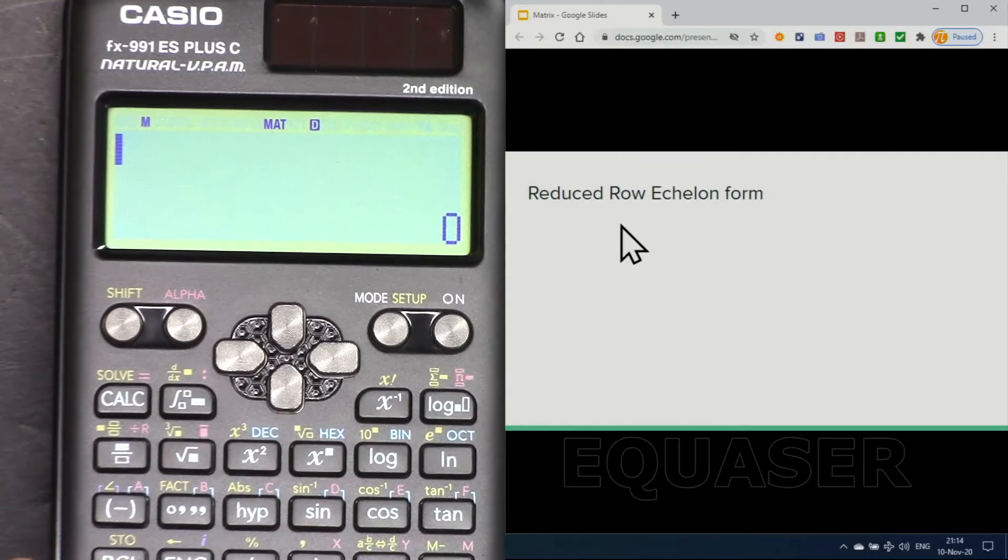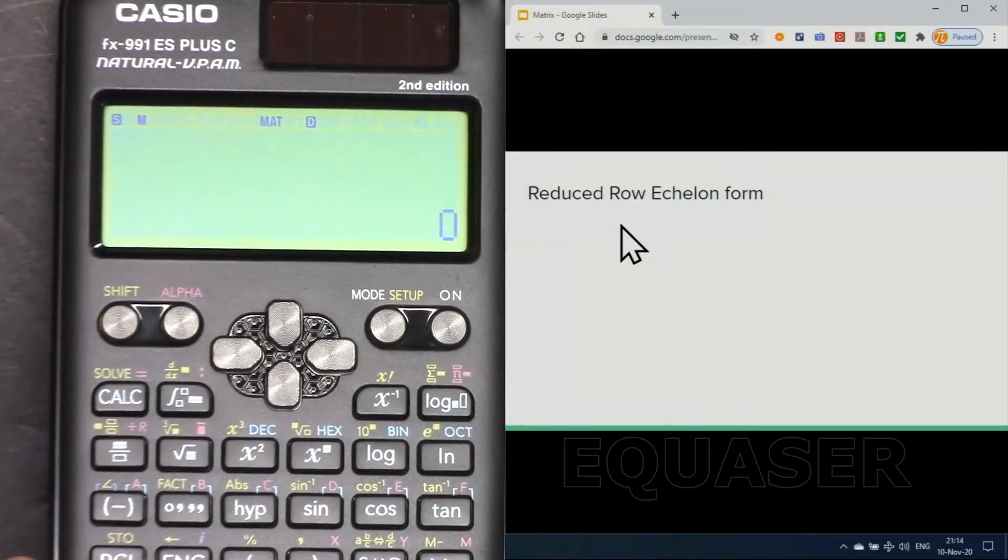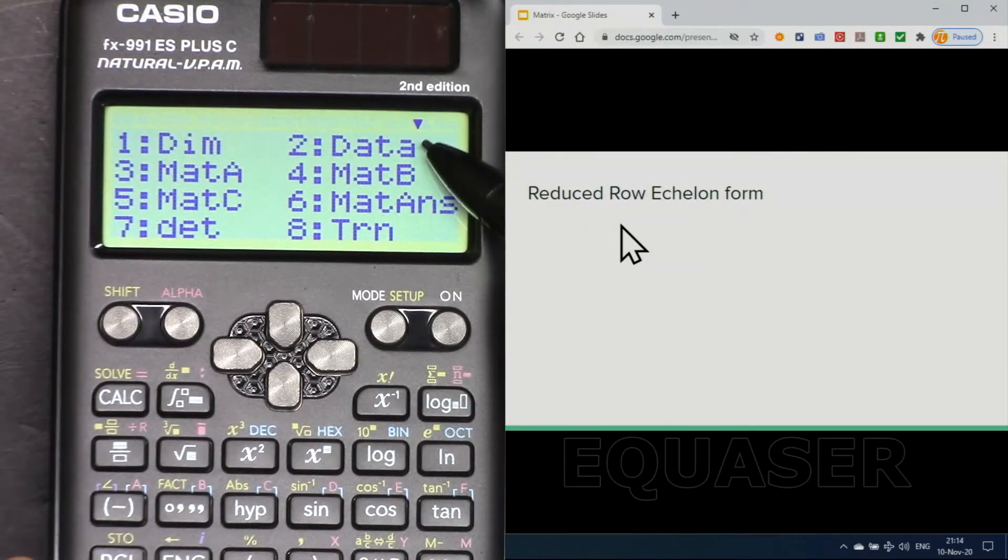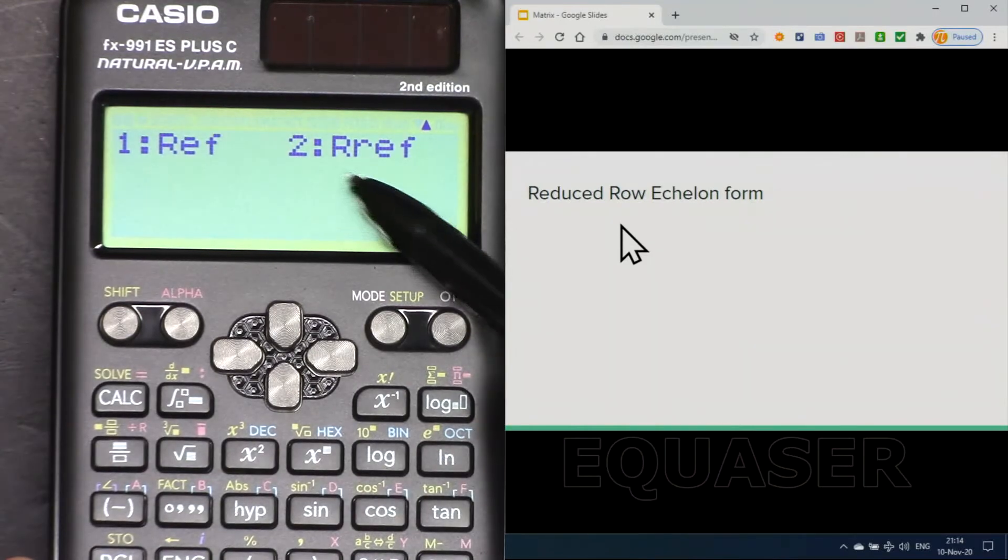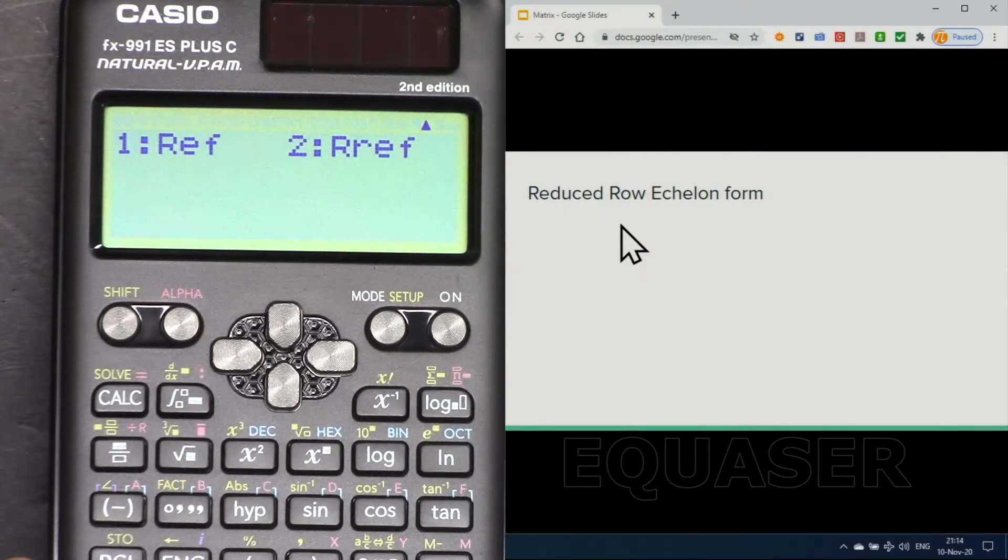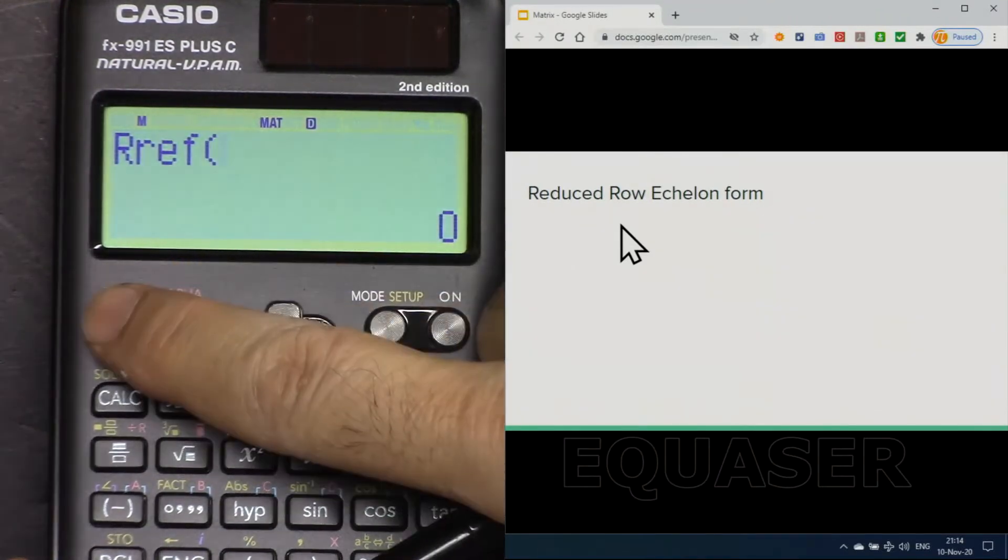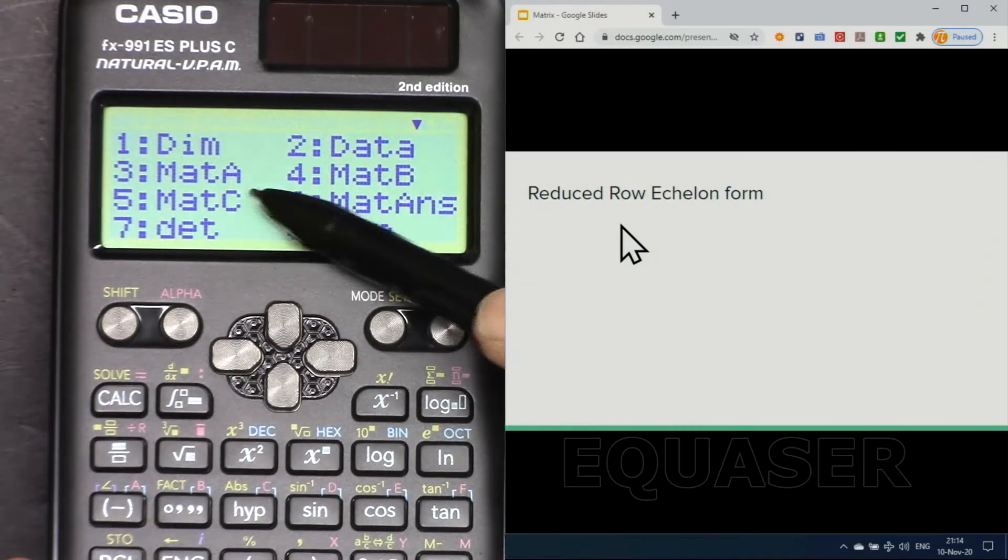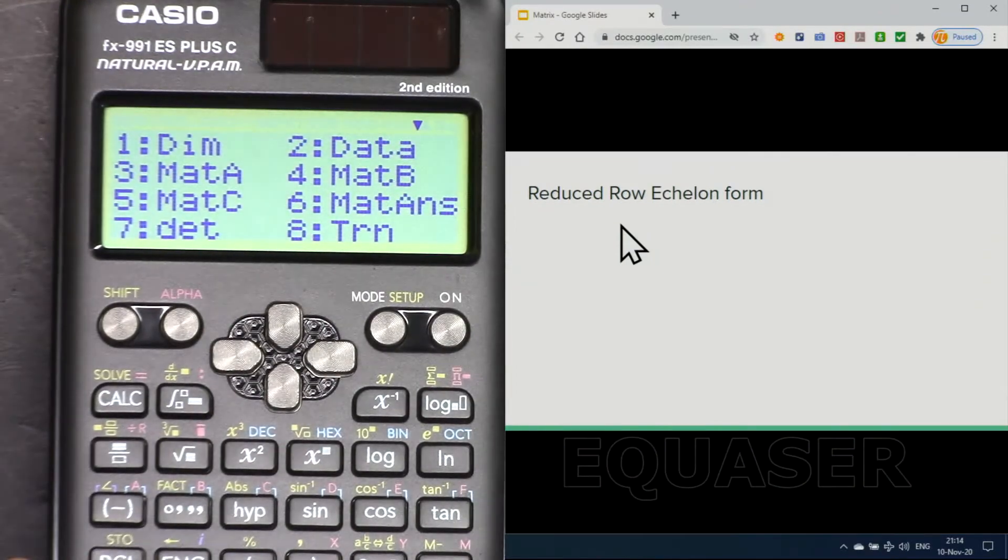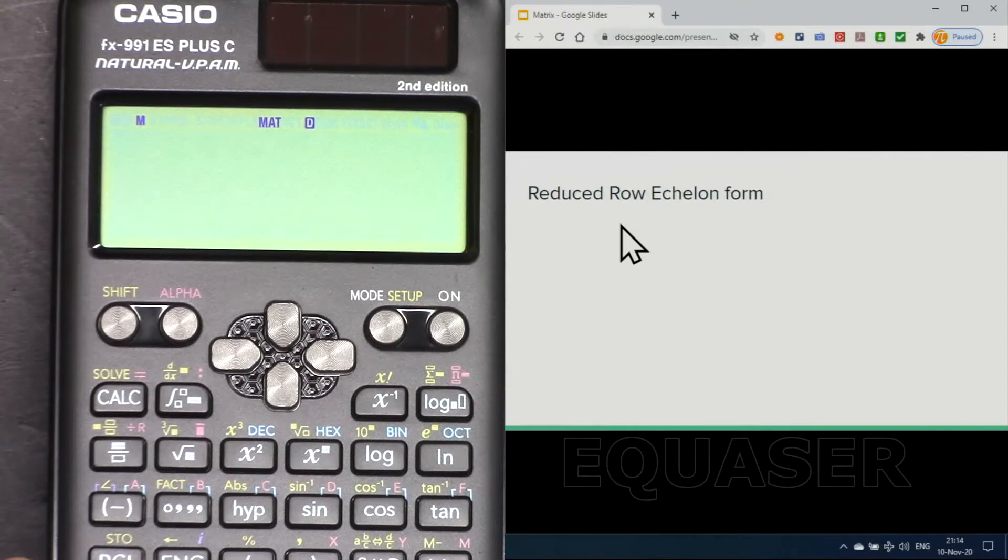Reduced row echelon form of a matrix: press shift 4, and from this arrow we know we have next screen. Come here, rref 2, and then bring the matrix. Shift 4, let's say we want to do this time matrix B 4, and then press equal sign.